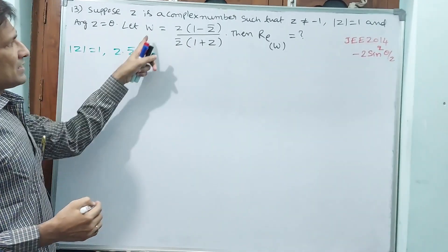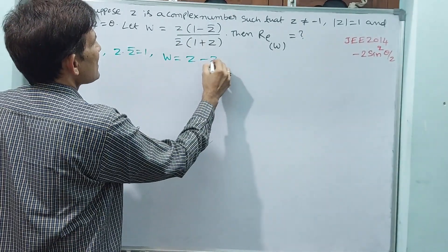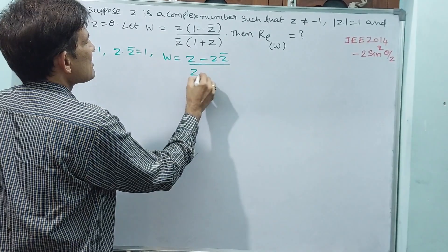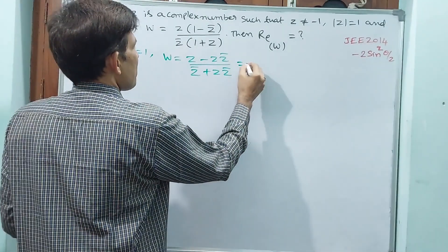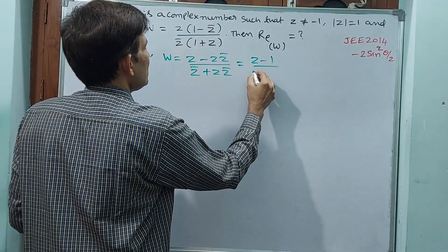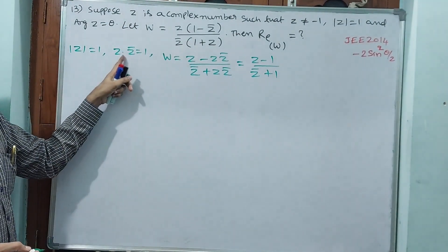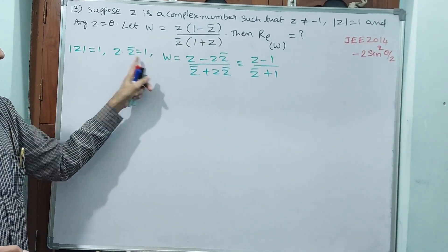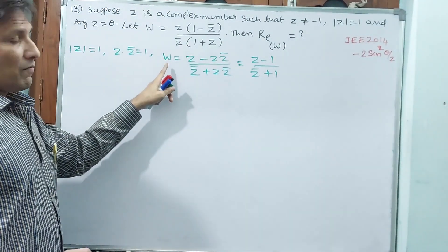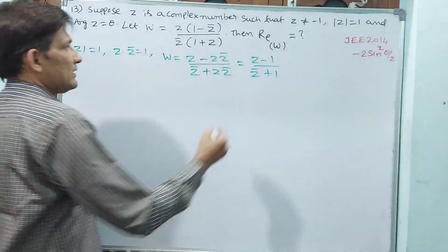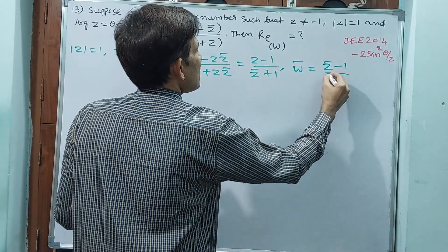Now observe carefully what I am doing. W equals (Z minus Z·Z̄) divided by (Z̄ plus Z·Z̄). Since Z·Z̄ equals 1, this becomes W equals (Z minus 1) divided by (Z̄ plus 1). Shall I write W̄ equals (Z̄ minus 1) divided by (Z plus 1)? That is the conjugate.